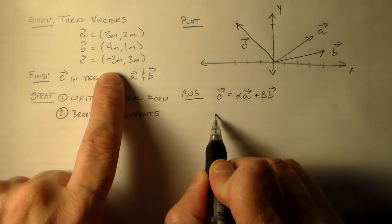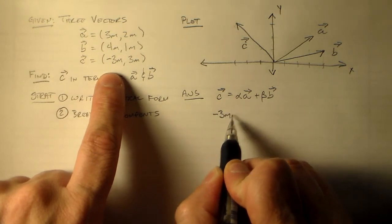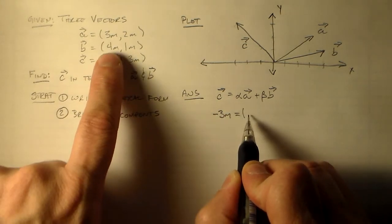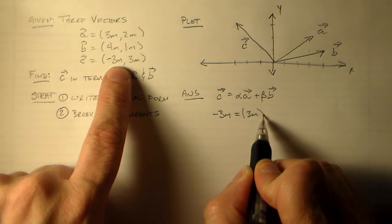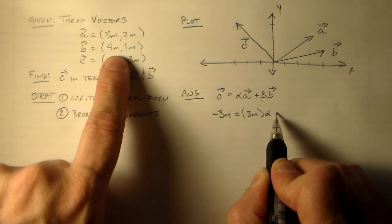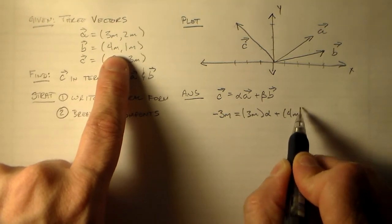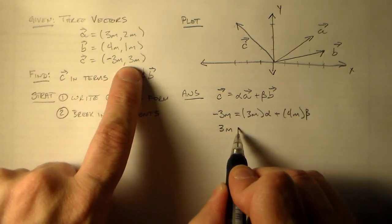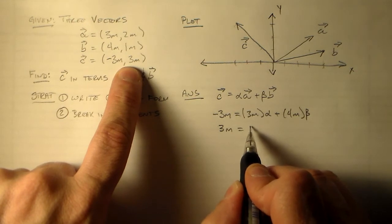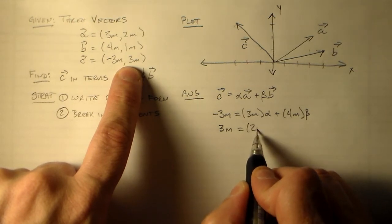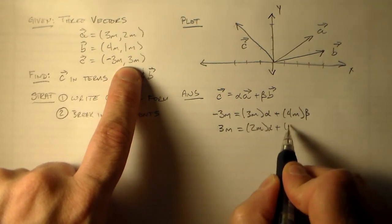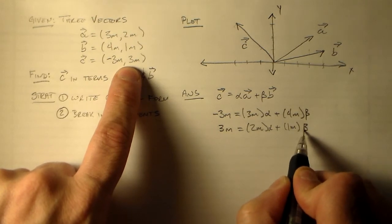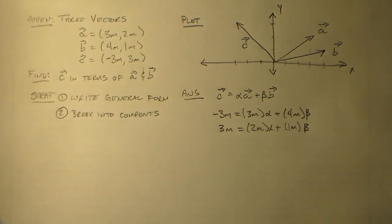Although they are going to be connected through the scaling constants. We'll get that later on. So our x direction is minus 3 meters is equal to 3 meters times alpha plus 4 meters times beta. We get something similar for the y component. 3 meters is equal to 2 meters times alpha plus 1 meter times beta. Simple, straightforward, we're not doing anything complicated yet.